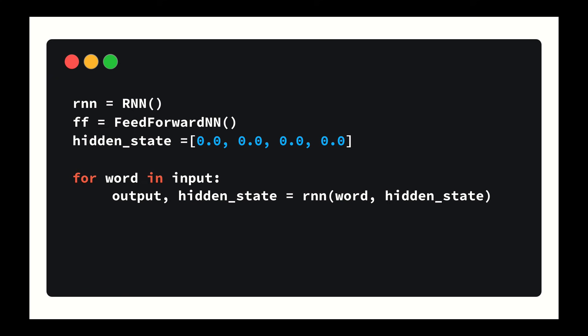The RNN returns the output and a modified hidden state. This modified hidden state should now contain information from all your previous steps. You continue to loop until you're out of words. Last, you pass the output to the feed-forward layer and it returns a prediction. And that's it! The control flow of doing a forward pass of a recurrent neural network is a for loop.